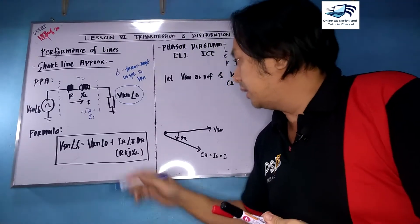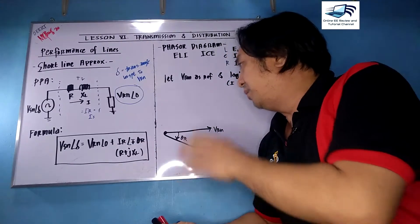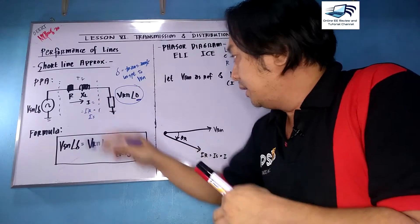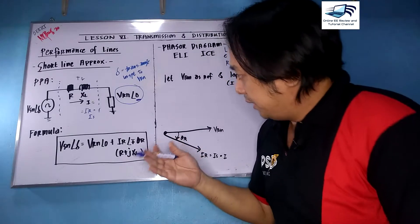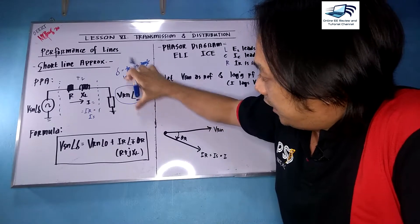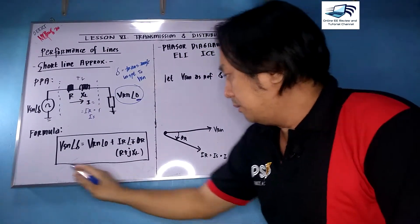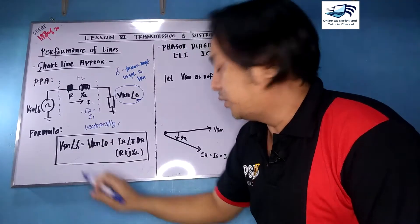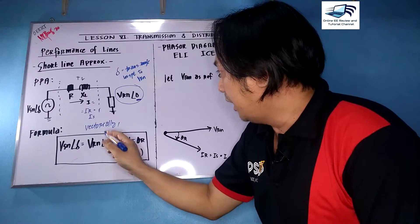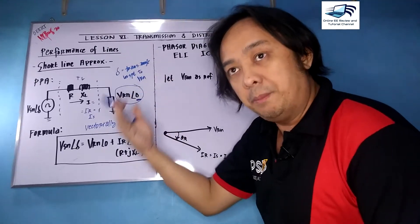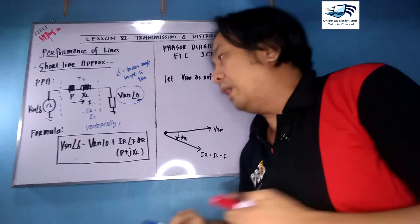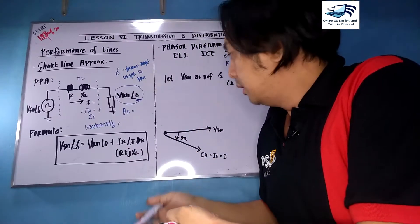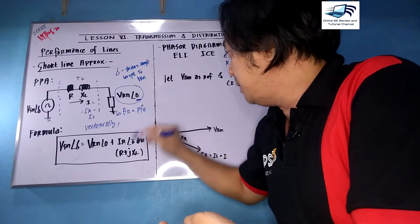From the phasor diagram, VRN is at angle zero and the current IR equals IS. Using circuit theory, the vectorial sum of voltage drops equals the sending-end voltage: VSN at angle alpha equals VRN at 0 plus IR at plus or minus theta-R, multiplied by R plus jXL. Theta-R is obtained from the power factor: cosine theta-R equals the power factor.